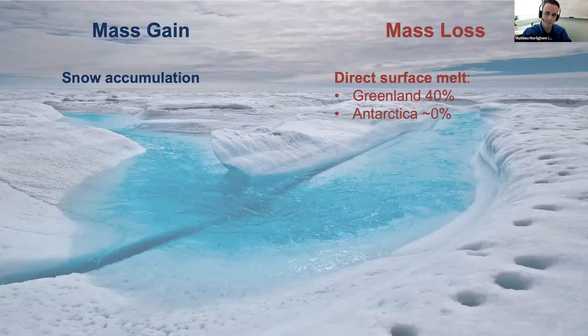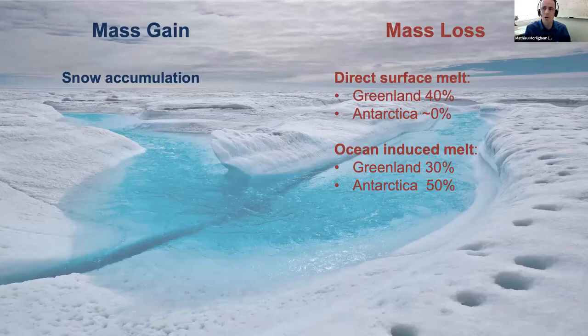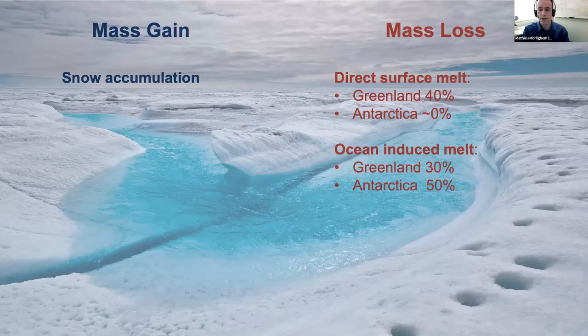The second process is ocean-induced melt. Looking at Antarctica, it's about 50% of the mass loss. There are large ice shelves around Antarctica, and sometimes warm water penetrates over the continental shelf from the circumpolar deep water, interacting with the ice shelves. Every year, 50% of the mass loss is through ocean-induced melt. For Greenland, it's about 30% — we have a few floating ice shelves especially in the north, and melt at vertical calving faces generates undercutting and leads to more calving.